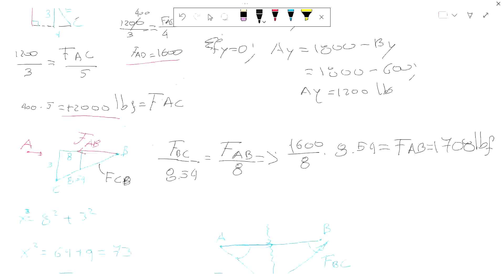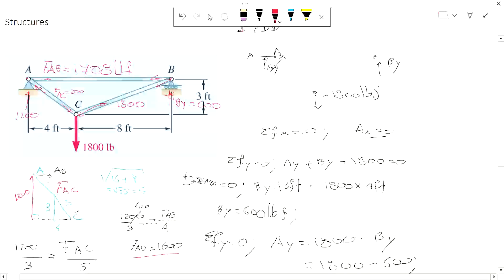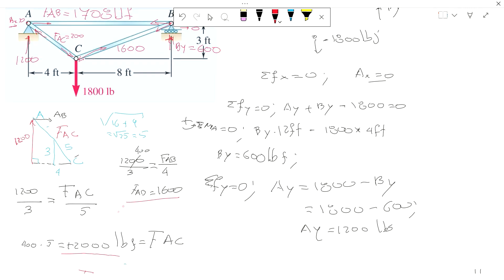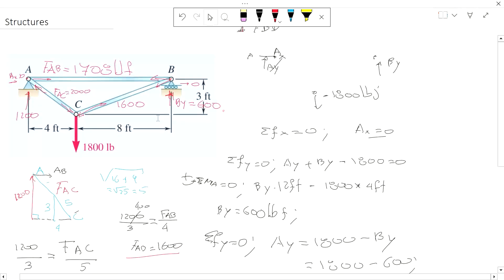To wrap up: Ax is zero, Ay is 1200, FAB is approximately 1710, FAC is 2000, and FC to B is 1600. The largest force is in member AC, and that makes sense because C is closer to fixed point A. All members are in tension in this problem.